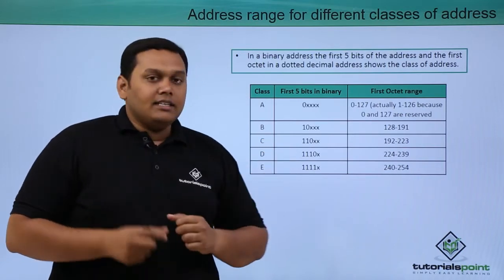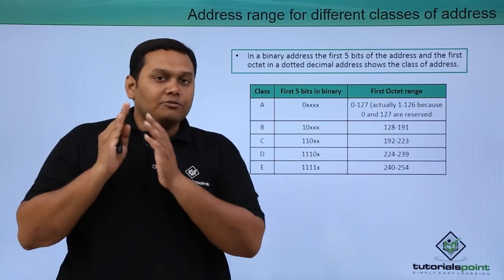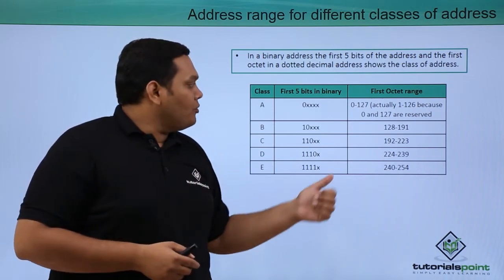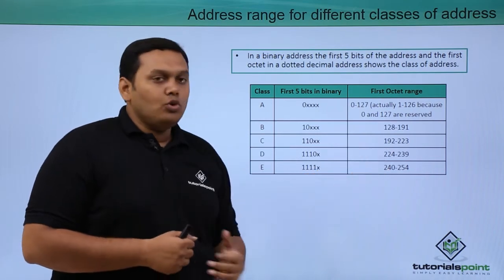Coming to class C, the first 2 bits in the octet are fixed values of 1. So we have to count 128 plus 64, which gives you 192 to 223.